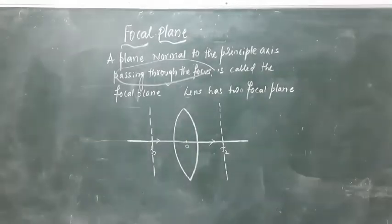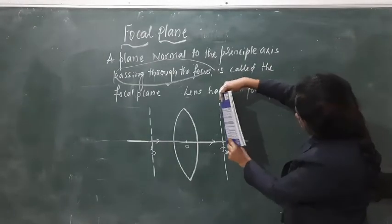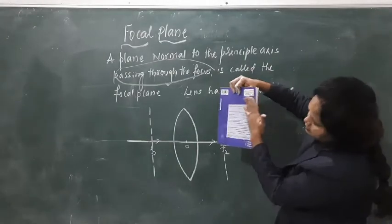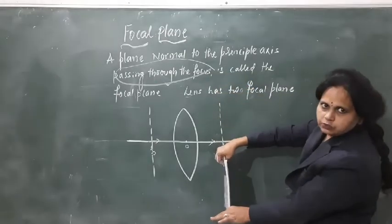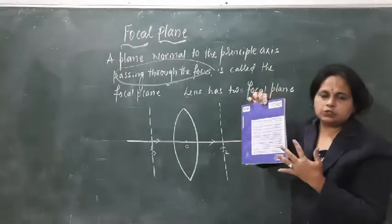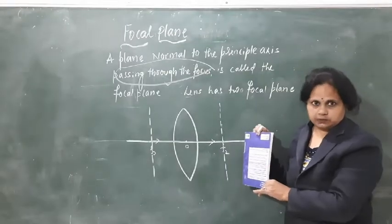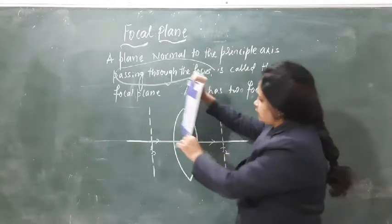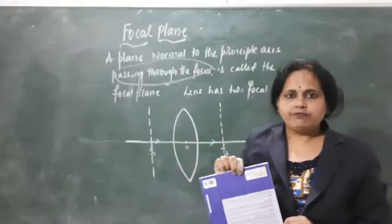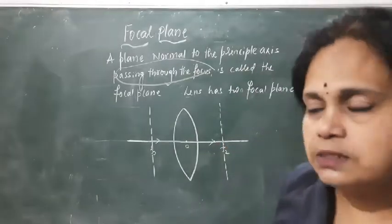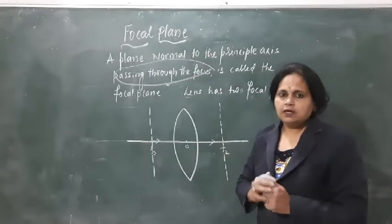I will take this textbook to demonstrate. If I pass this — this whole thing is a plane. If this passes through F2, this plane passes through F2, then this whole plane is to be understood as focal plane 2. It is a three-dimensional concept. Similarly, if the plane is passing through F1, perpendicular to F1, then it is called focal plane 1. In this sense, every convex lens has two focal planes.